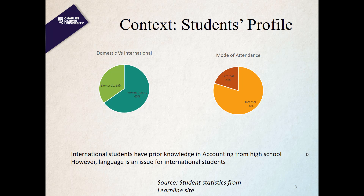Almost 80% of students are internal and only 20% are external, meaning students who take classes online. All this information is taken from the student statistics on the LearnLens site.